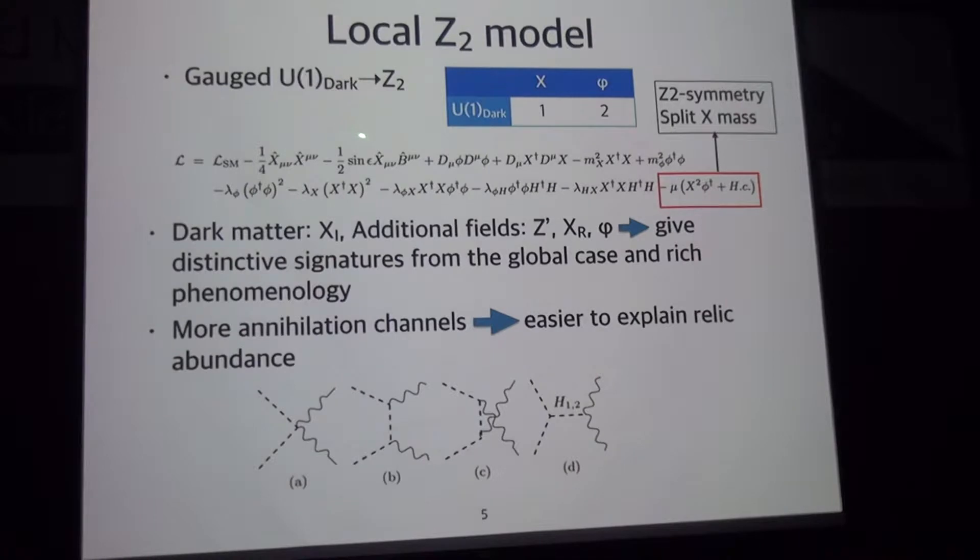First model. This model has U(1) dark symmetry, which is local symmetry. And the particle contents has dark matter X and dark scalar phi, which breaks this U(1) gauge symmetry. This is the Lagrangian. And after this phi gets vacuum expectation value, U(1) symmetry is broken down to Z2 symmetry due to this term. And this term also gives mass splitting of dark matter X. So we assume the imaginary part of X is the lightest Z2 odd particle. So this is dark matter candidate.